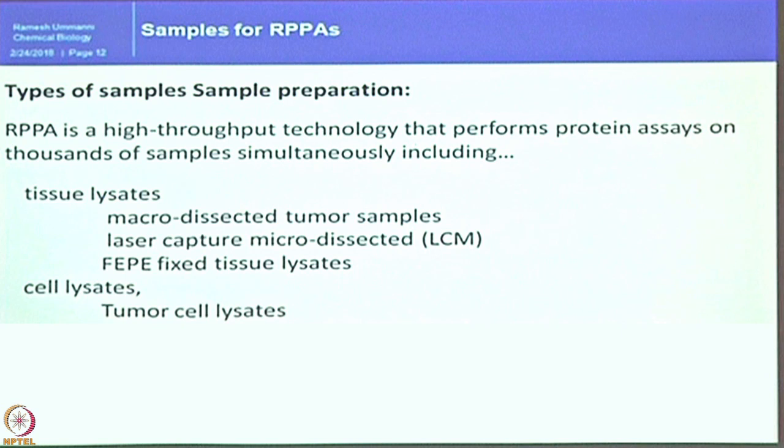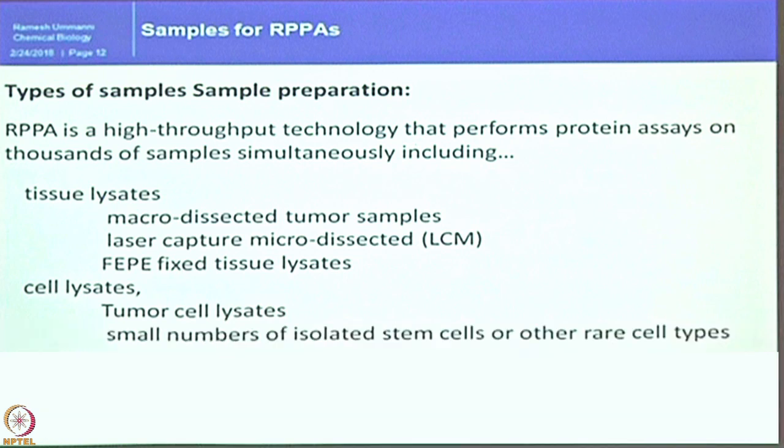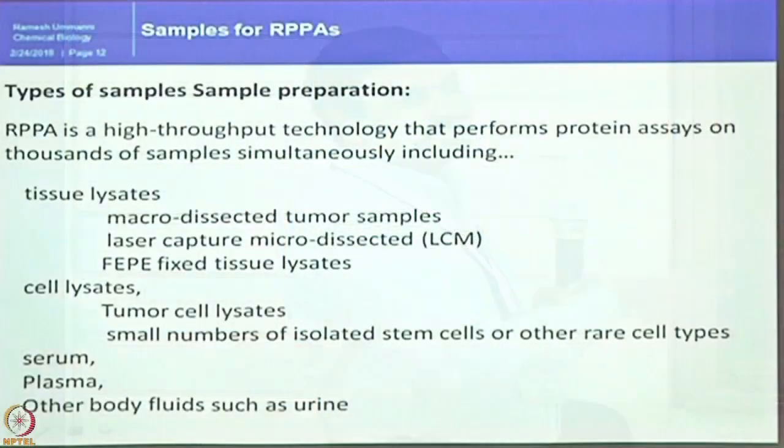Cell lysates — particularly tumor cell lysates that many of you may be handling in the lab — can be prepared, and small numbers of isolated stem cells or other rare cell types can also be used. Stem cell biology always deals with thousands rather than millions of cells. Serum, plasma, or any body fluid such as cerebrospinal fluid or urine can also be directly printed on the array following specific methods.